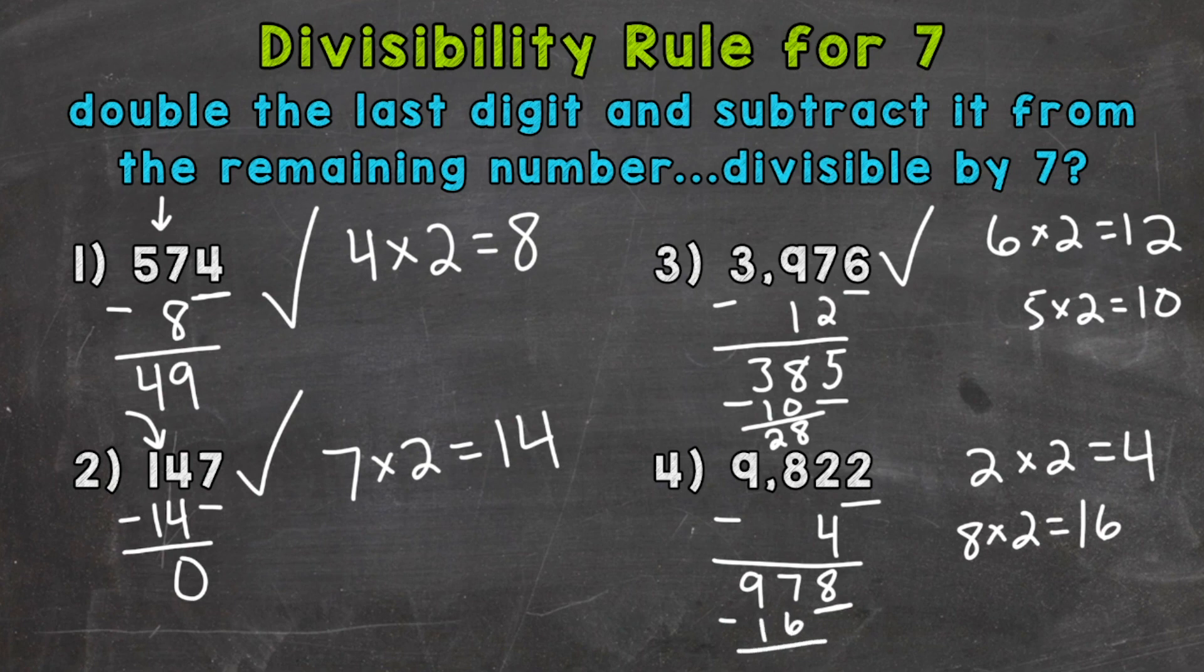So we need to do 97 minus 16, which is going to give us a 1 in the 1's place. I'm going to write it over here so it's a little bit bigger. A 1 and then an 8 here. So we get 81. Now 81 is not divisible by 7, therefore our original number, 9,822, is not divisible by 7 either.